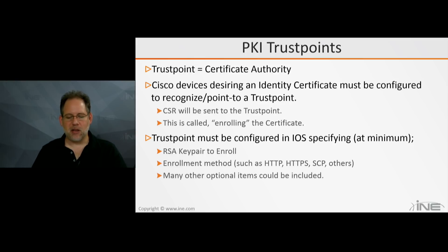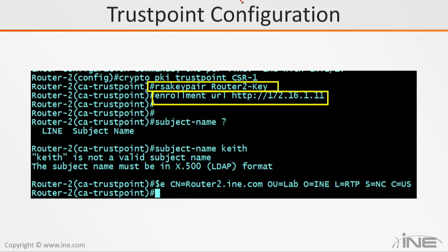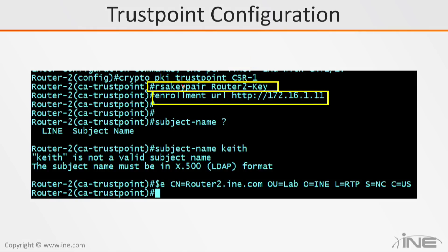There are many other optional items that could be included. In our trust point configuration, we can see we've given our trust point a name — in this case, CSR1. That can be any name; it's just a descriptive name, not really all that relevant. The important thing is the RSA key pair command. Assuming you've already created an RSA key pair and labeled it 'router2-key', whatever name you gave it is what you need to refer to here.